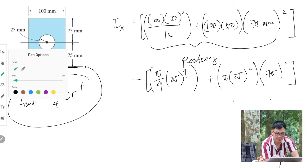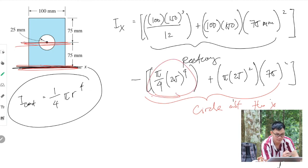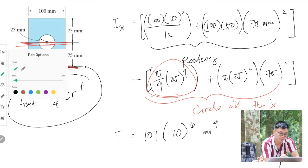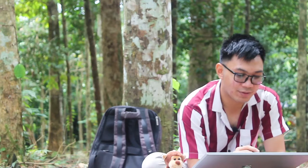This is the moment of inertia of your circle about the x-axis, not the centroidal axis. Therefore, your answer is 101 times 10 to the power of 6 millimeters to the 4th power. And that is how you get the moment of inertia of a composite body. Let's have another example.